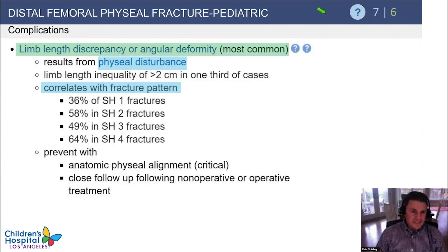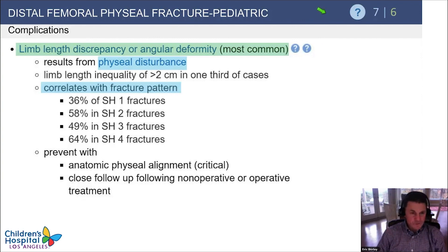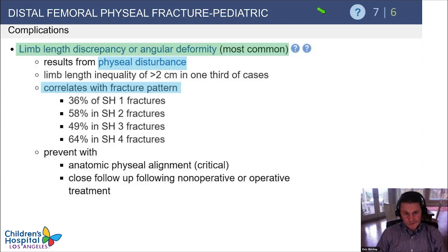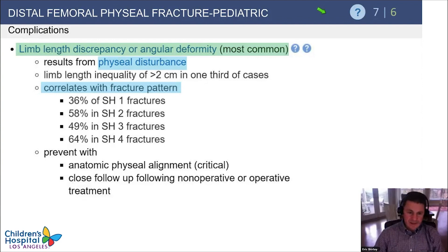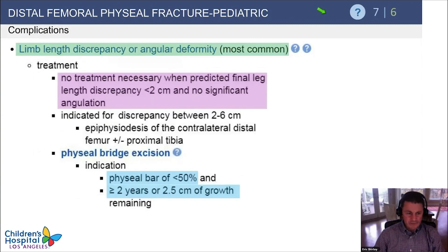The most important complication to discuss is limb length discrepancy or angular deformity from physeal disturbance. It correlates with fracture pattern: 36% of Salter I's, 58% of Salter II's, 49% of Salter III's, and 64% of Salter IV's develop physeal arrest. This can be reduced with anatomic physeal alignment and close follow-up to detect problems early.